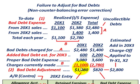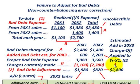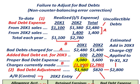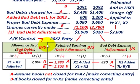Total bad debt adjustment — allocated based on proper expense versus charges currently made — is $1,980 for 20x1 and $820 for 20x2, which adds up to the $2,800 estimated extra bad debt expense against those 20x1 and 20x2 sales. So first we added the bad debt estimate for 20x3 to each sales year, determined proper bad debt expense, then subtracted charges currently made to get our bad debt adjustment.